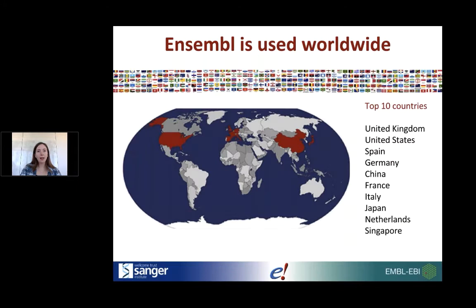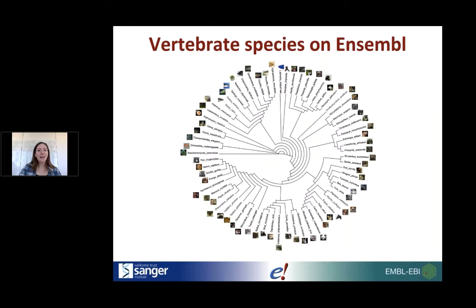Ensembl is used worldwide. We're based in Europe; the other genome browsers are based in the US, but we're definitely used around the world. The main Ensembl project focuses on vertebrates — we have over 70 vertebrate species, chosen to be model organisms or scientifically important while also covering broad taxonomic space. The astute of you will notice we have three non-vertebrates: C. elegans, Drosophila, and Saccharomyces cerevisiae — included for historical reasons and because they're useful for anchoring our gene trees.